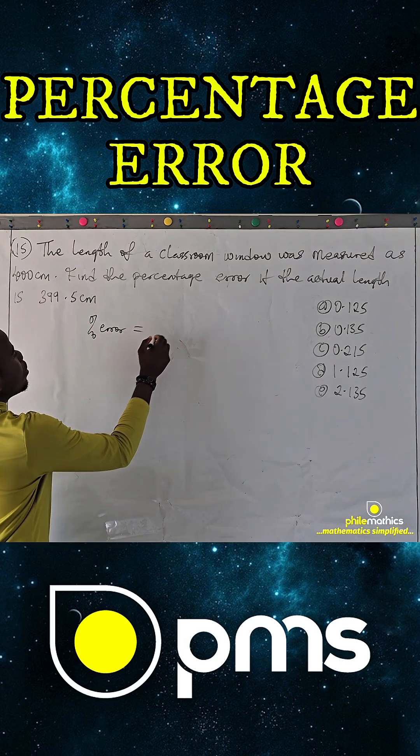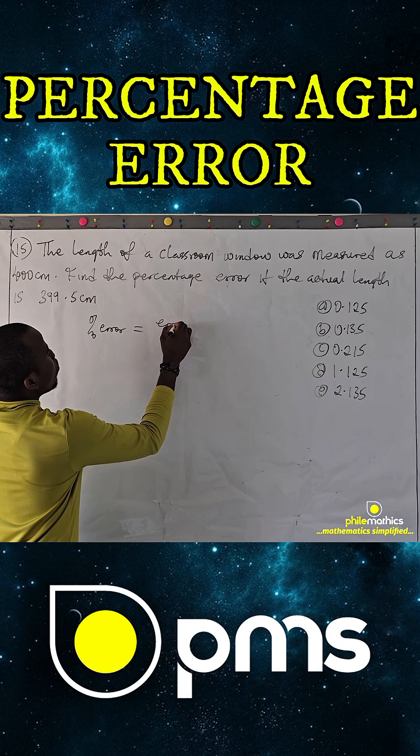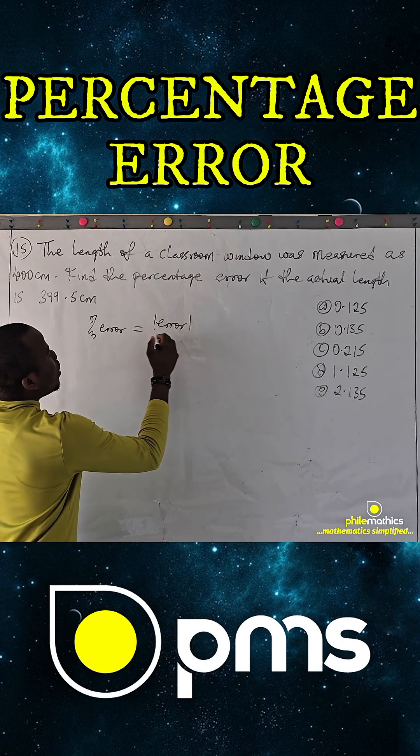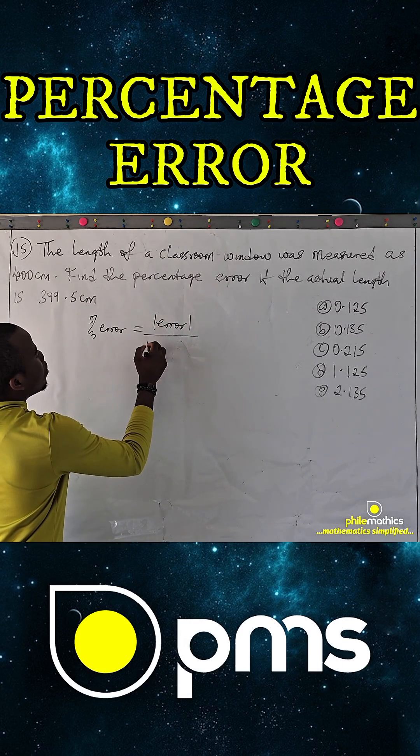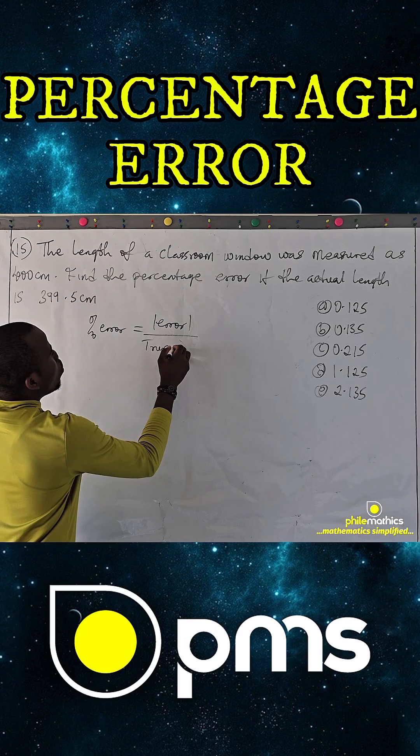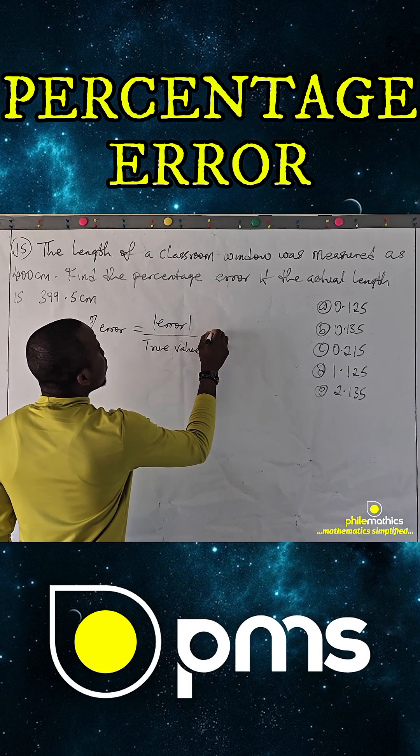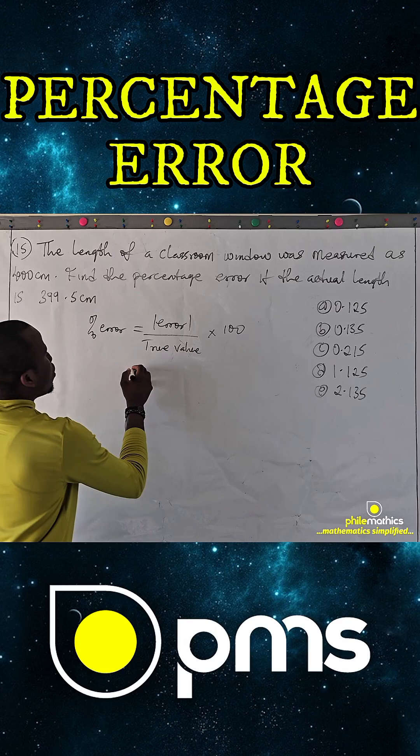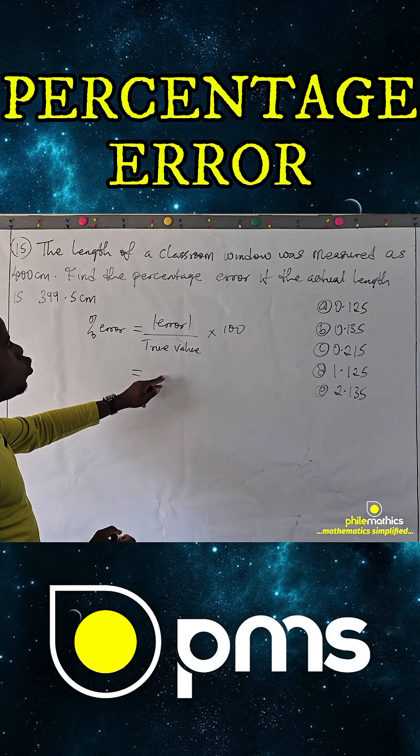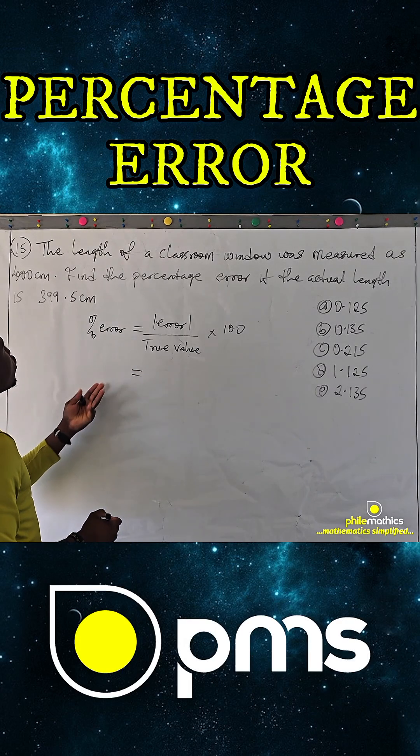Percentage error is simply the error, or the absolute value of the error, over the true or actual value times 100. And so how we measure the error is the true minus the false or the miscalculated value.